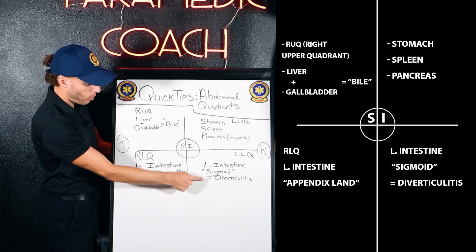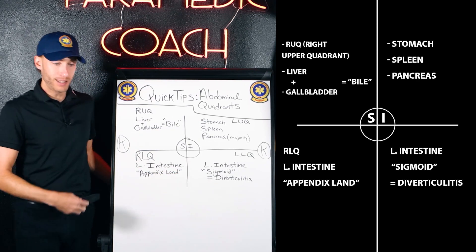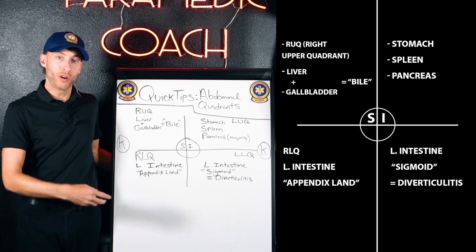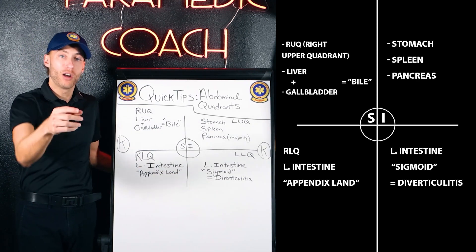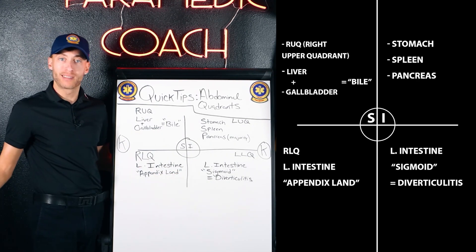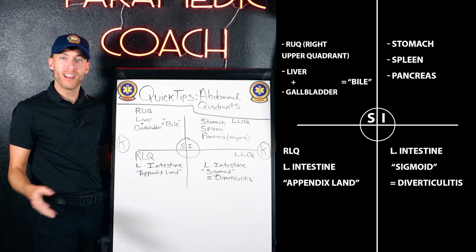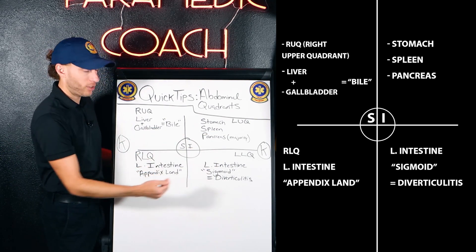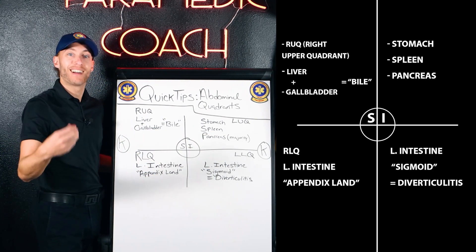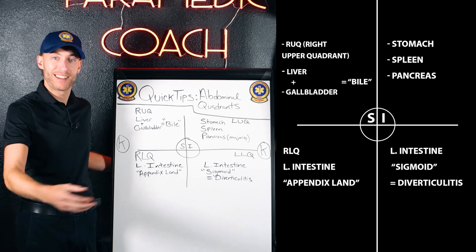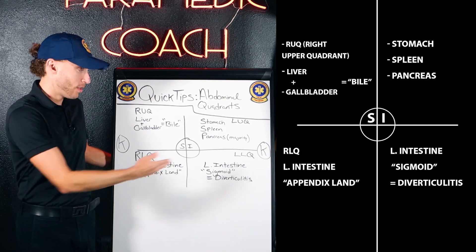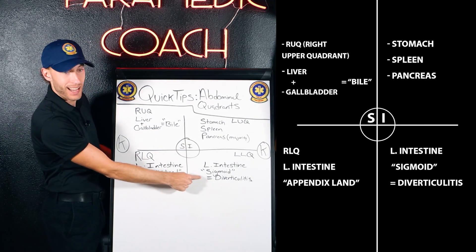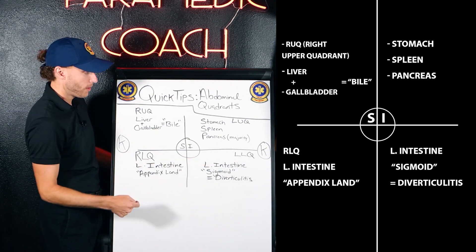The last quadrant, the left lower quadrant, is our sigmoid colon. What happens in the sigmoid colon and the descending colon? Diverticulitis. That's the pain — diverticulitis land is over here.